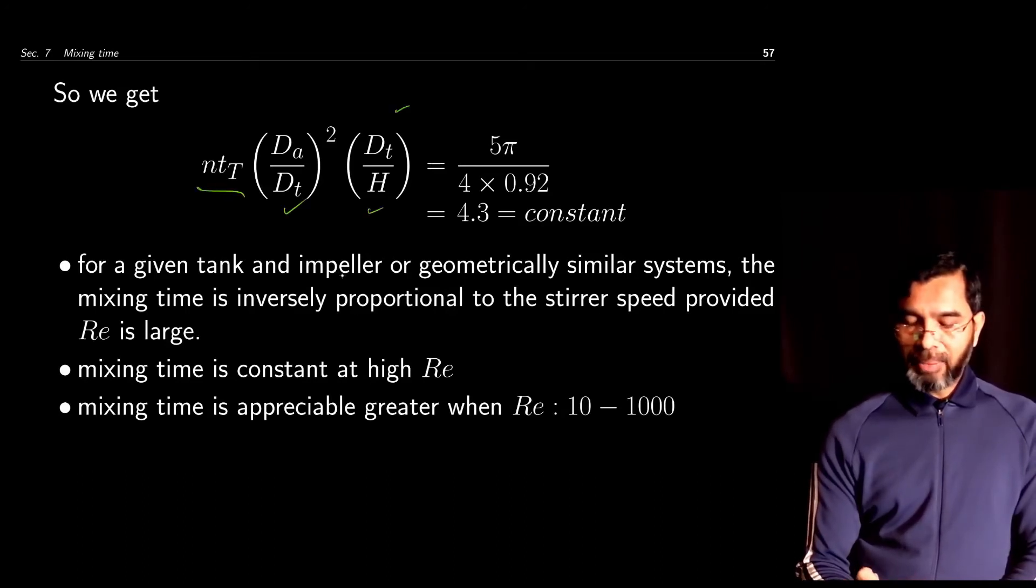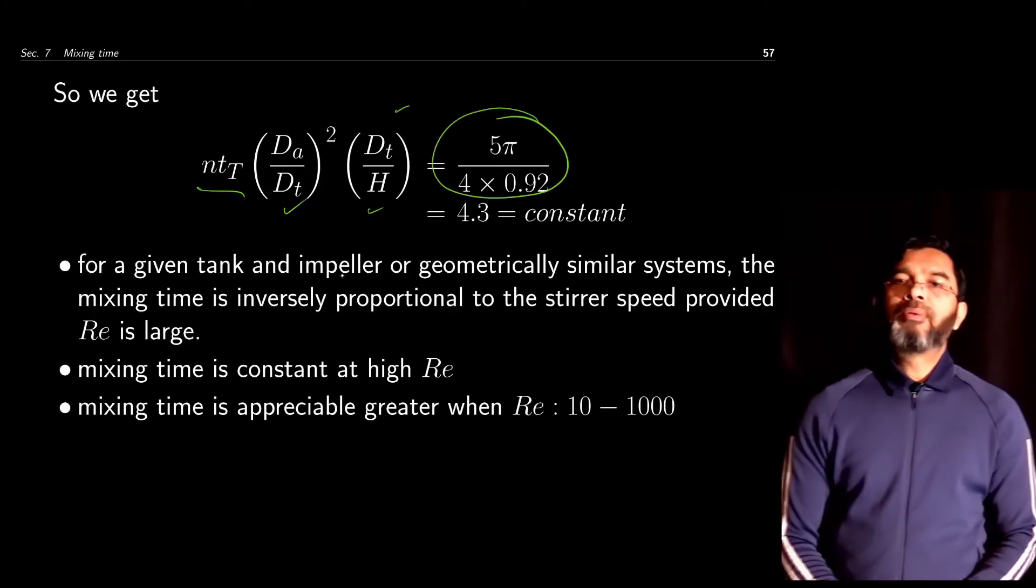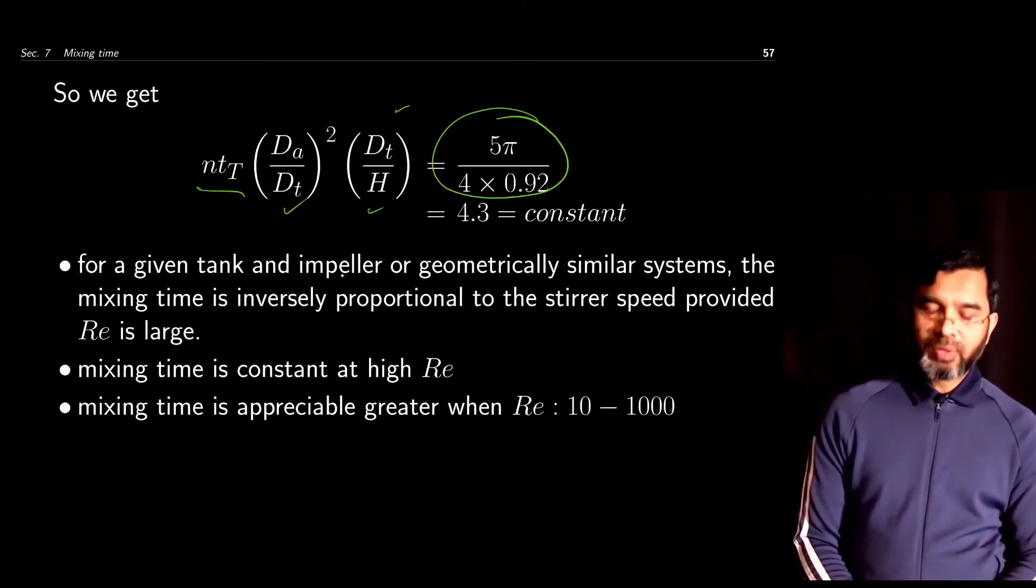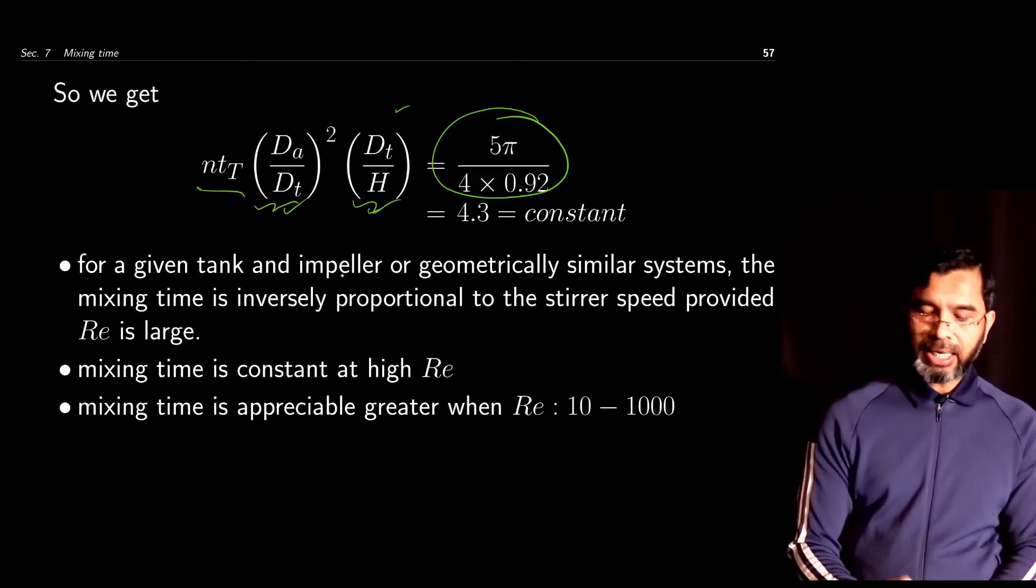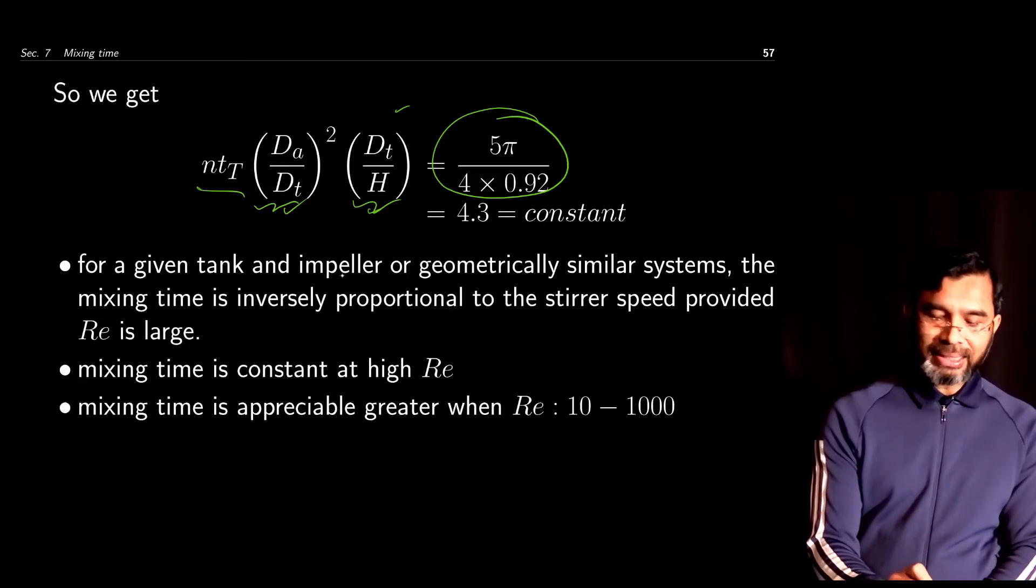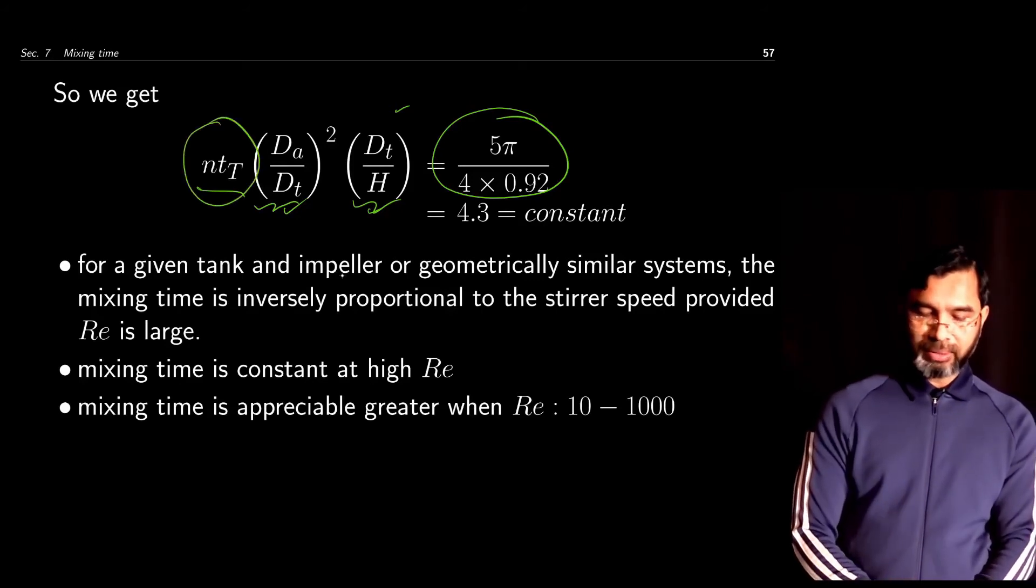Now if we compare two geometrically similar sets, meaning that da/dt is constant and dt/h is constant, for those cases ntt will also be constant. So this relation of ntt for a given tank and impeller or geometrically similar systems shows that mixing time is inversely proportional to the stirrer speed.